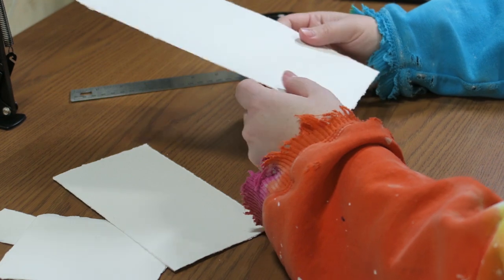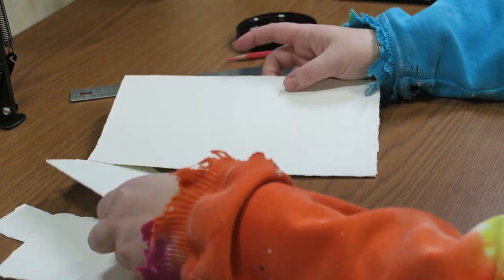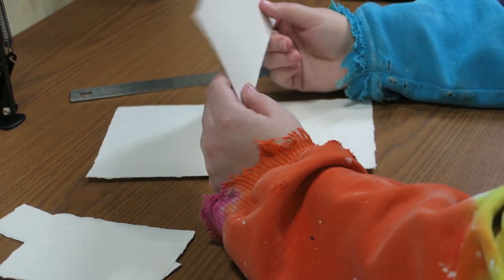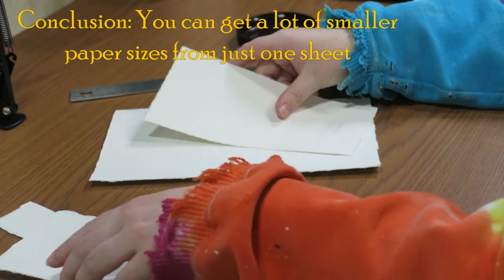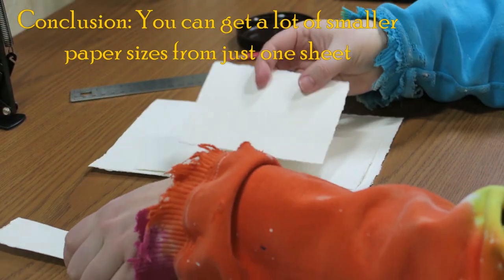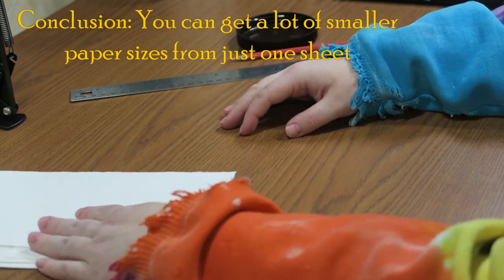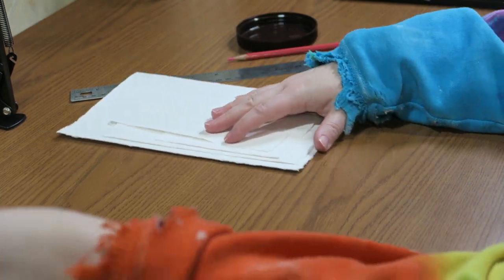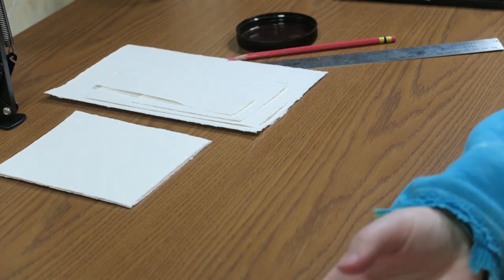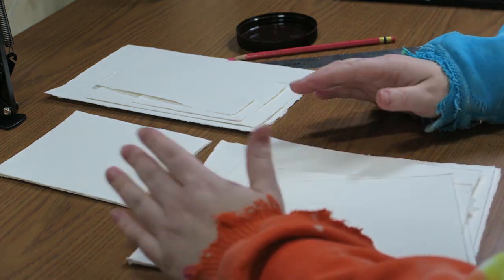So I'm just gonna leave it a bigger sheet, use it for probably another swatch card. And yes, so lots of workable paper. So there you go, that is how I will rip, measure, tear my paper.